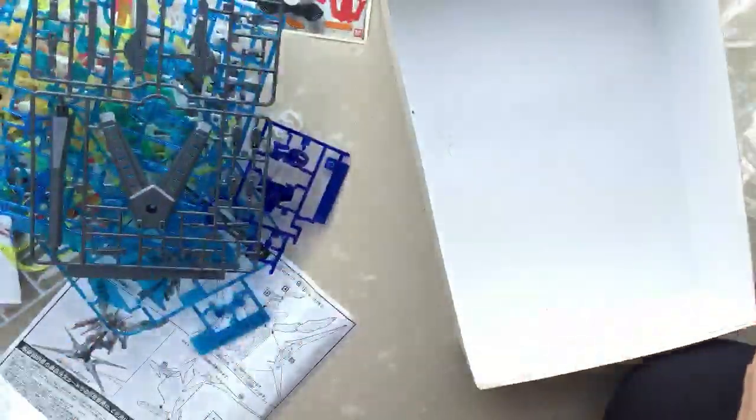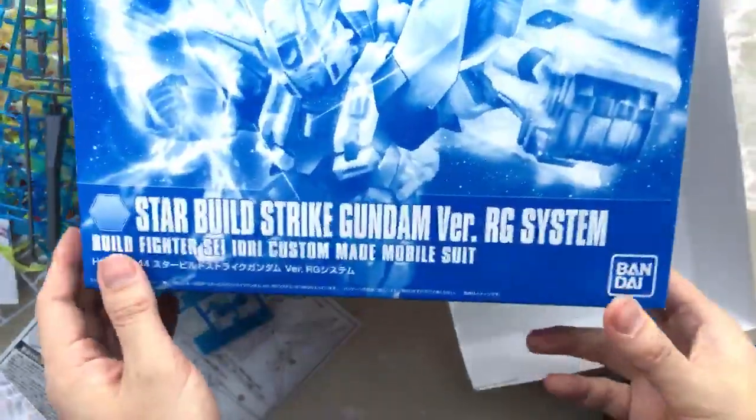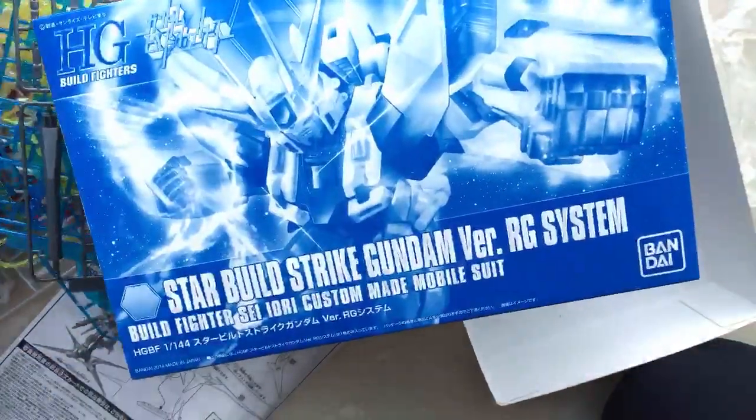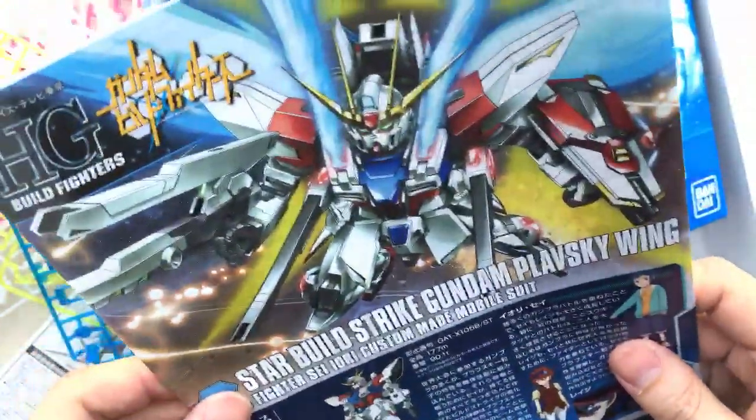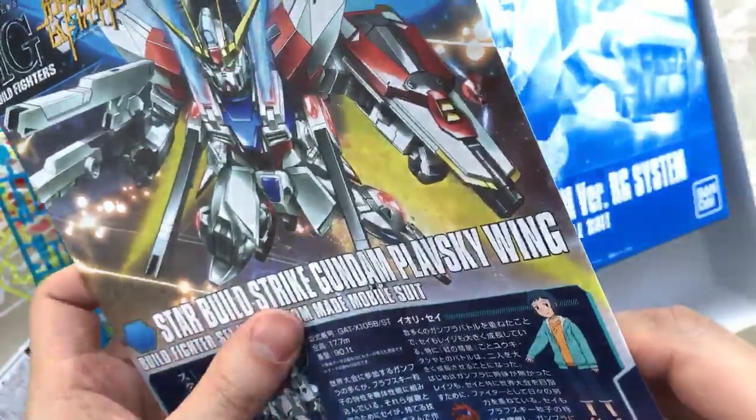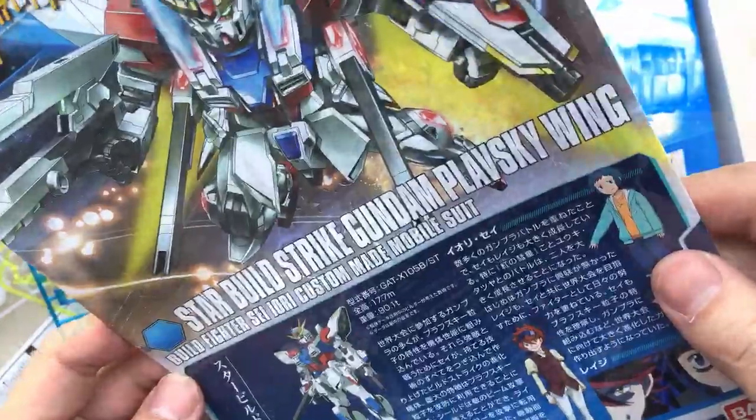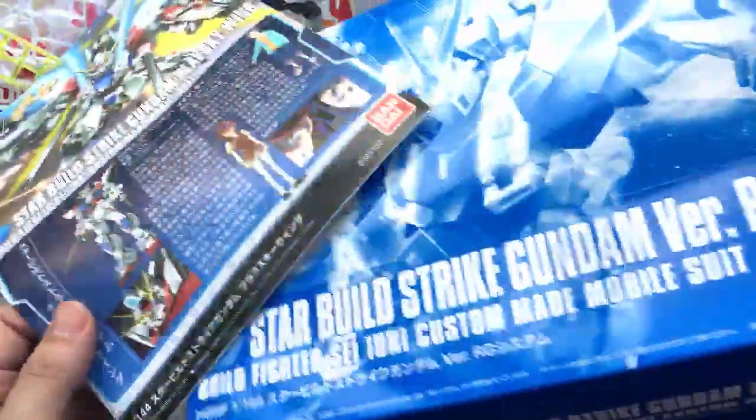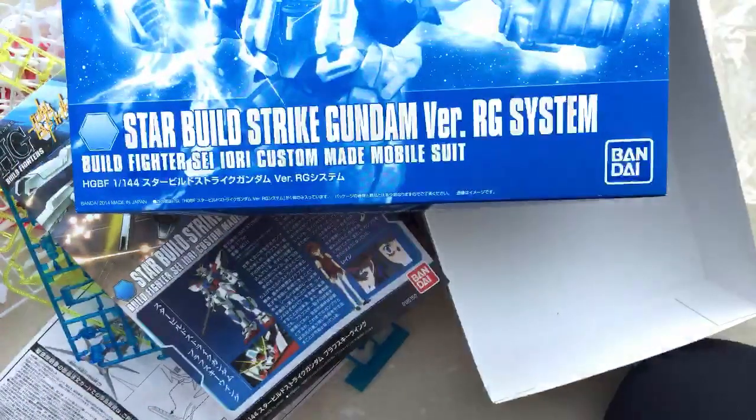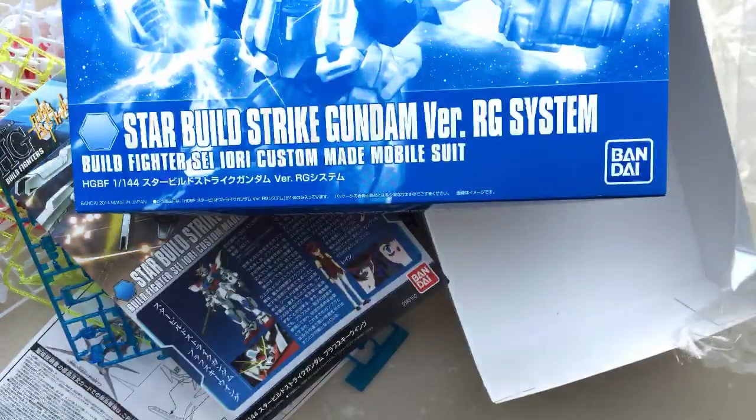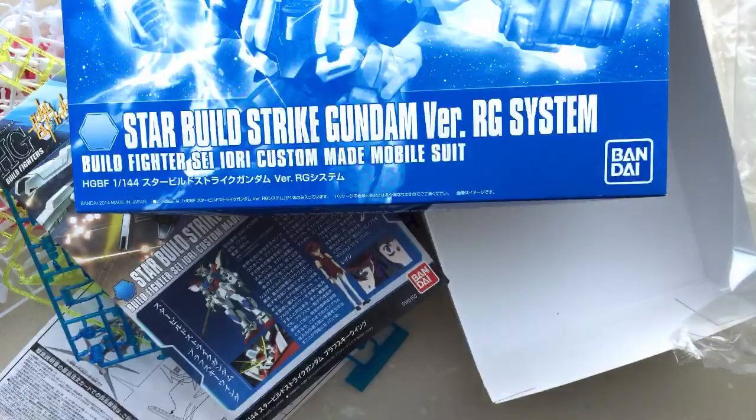So there you go. Now you've done this unboxing, we can go on and let you build this star build strike Gundam Plavsky wing. Hang on, I'm sure I saw a price on this one. 1,800 yen. It's a nice one, this one, isn't it? Lots of them are sparkly. Bye!